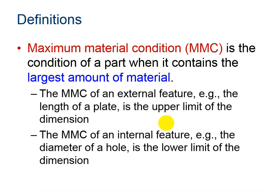Maximum material condition is the condition of a part when it contains the largest amount of material. So on an external feature it would be the upper limit. But on an internal feature, the diameter of a hole for example, it would be the lower limit because that would cause you to use the most material.